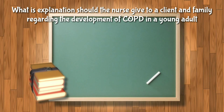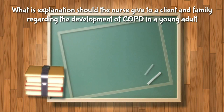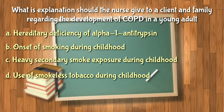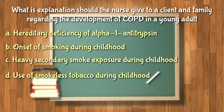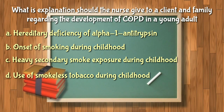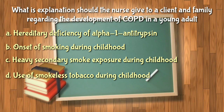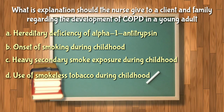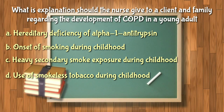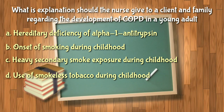Next question: What explanation should the nurse give regarding the development of COPD in a client as an adult? The onset of physiological changes compatible with COPD is most often associated with a hereditary deficiency of alpha-1 antitrypsin, which is an enzyme that protects lung tissue against loss of elasticity.